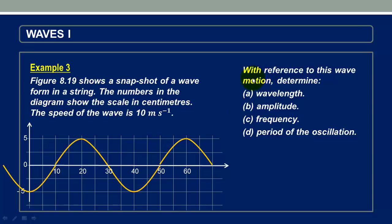Now we are told that with reference to this wave motion, determine the wavelength, amplitude, frequency, and period of the oscillation. Now how would we determine these physical quantities?